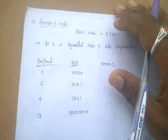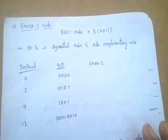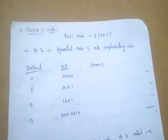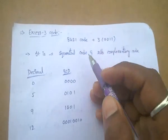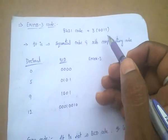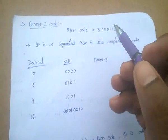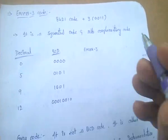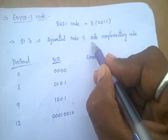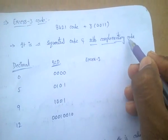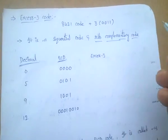Next one: XS3 codes. XS3 code is nothing but 8421 code plus addition of 3. It is also called as sequential code or self-complementing code.